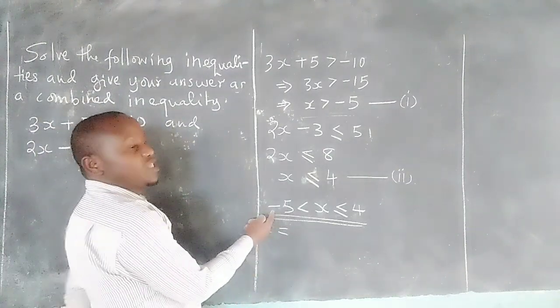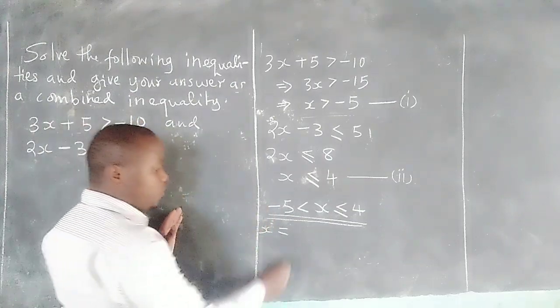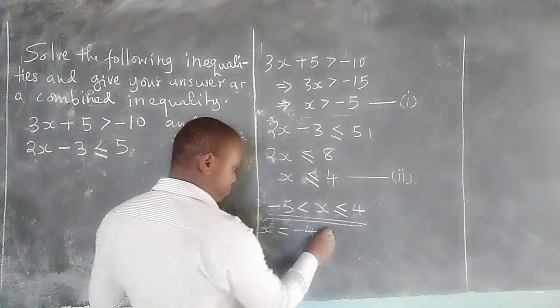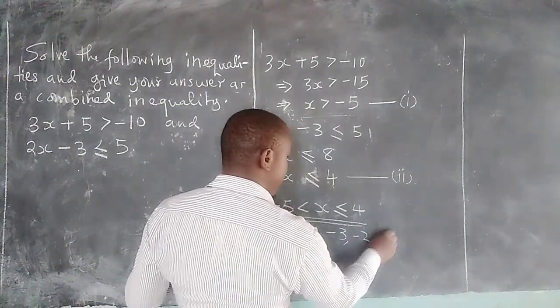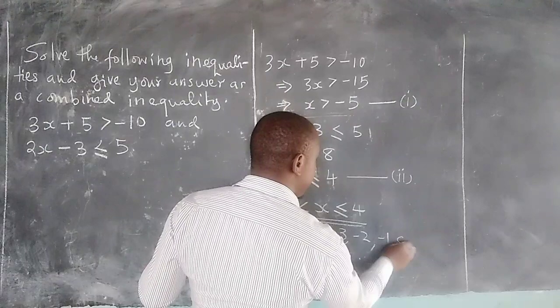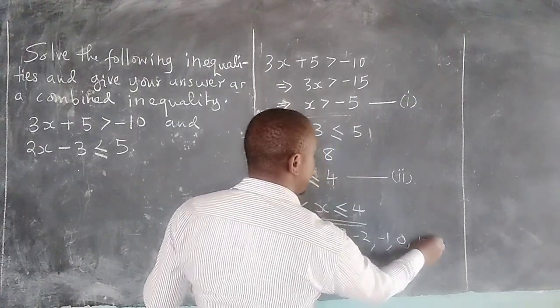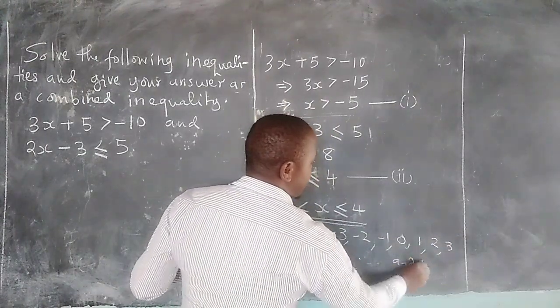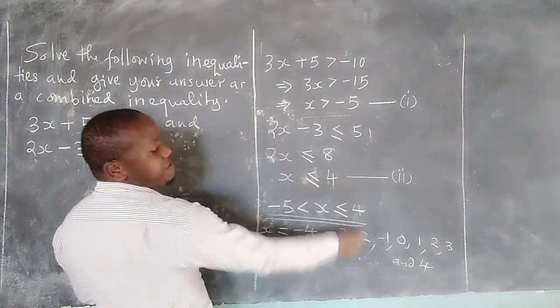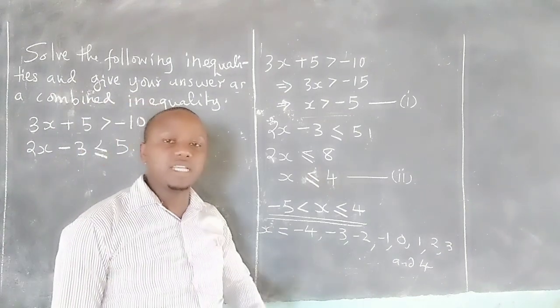-5 is not one of them lower limit, so we are starting from -4, -3, -2, -1, 0, 1, 2, 3, and because of this symbol, 4 is also an element.